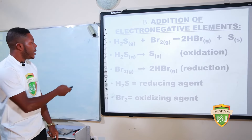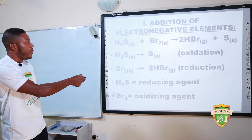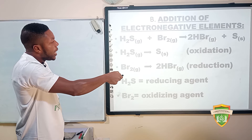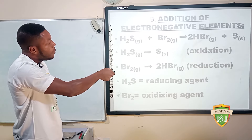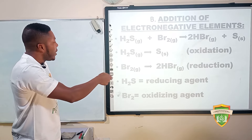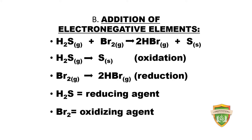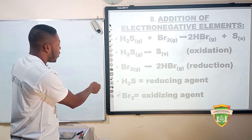Next example — addition of a more electronegative element: hydrogen sulfide (H₂S) reacting with bromine gives hydrogen bromide (HBr) and sulfur. From H₂S down to normal sulfur is called oxidation. The reducing agent enables H₂S to get rid of hydrogen, giving normal sulfur atom. The other way — from bromine to HBr — shows that bromine acts as the oxidizing agent enabling reduction, because a more electronegative element (bromine) is added to hydrogen.